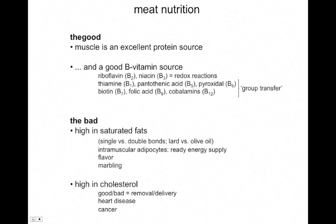Let's talk about nutrition for a moment. The good is that protein is important, and muscle is an excellent source of protein. We've already mentioned what the main proteins in muscle are: myosin and actin. And we'll talk about other proteins in a few minutes. Aside from protein, meat is a wonderful B vitamin source — these are water-soluble vitamins.